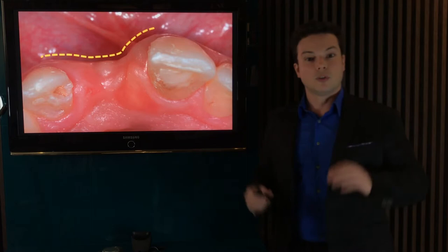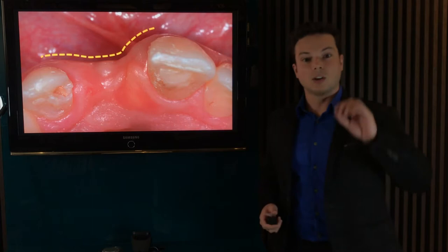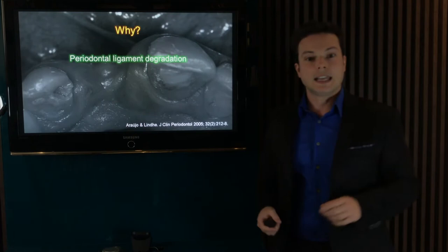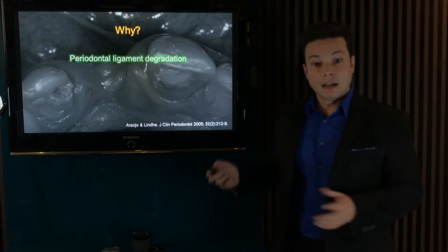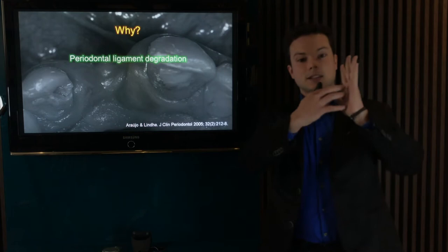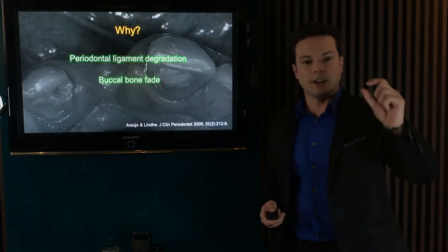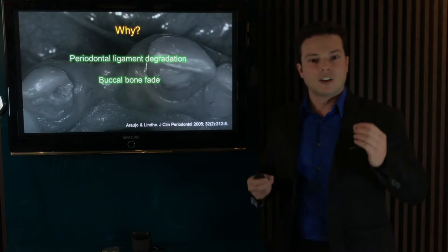After tooth extraction, a remodeling process takes place on the alveolar ridge, leading to a volumetric change that reduces the bone availability for further dental implant placement. Dimensional alterations happen because the periodontal ligament is lost after tooth removal, and the healing process of the alveolus takes the bundle bone with it. Bundle bone is an anatomical structure where periodontal ligament fibers are inserted. As the bundle bone deteriorates, the buccal bone fades away — especially in individuals with a thin gingival phenotype.